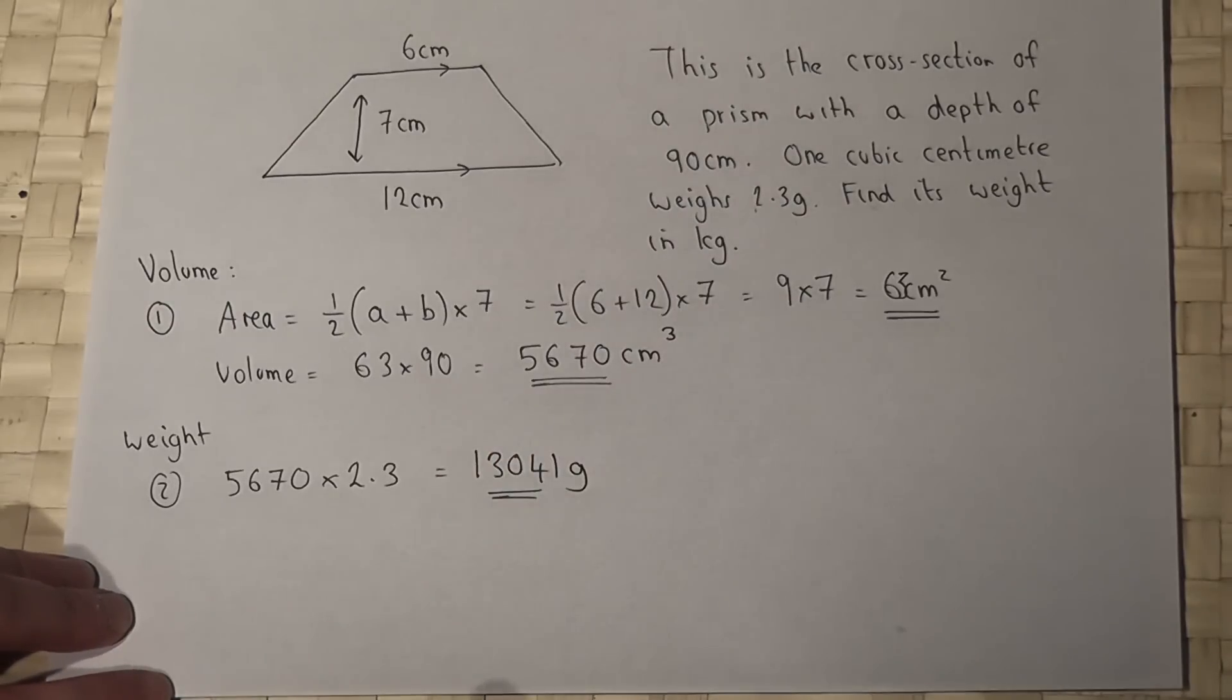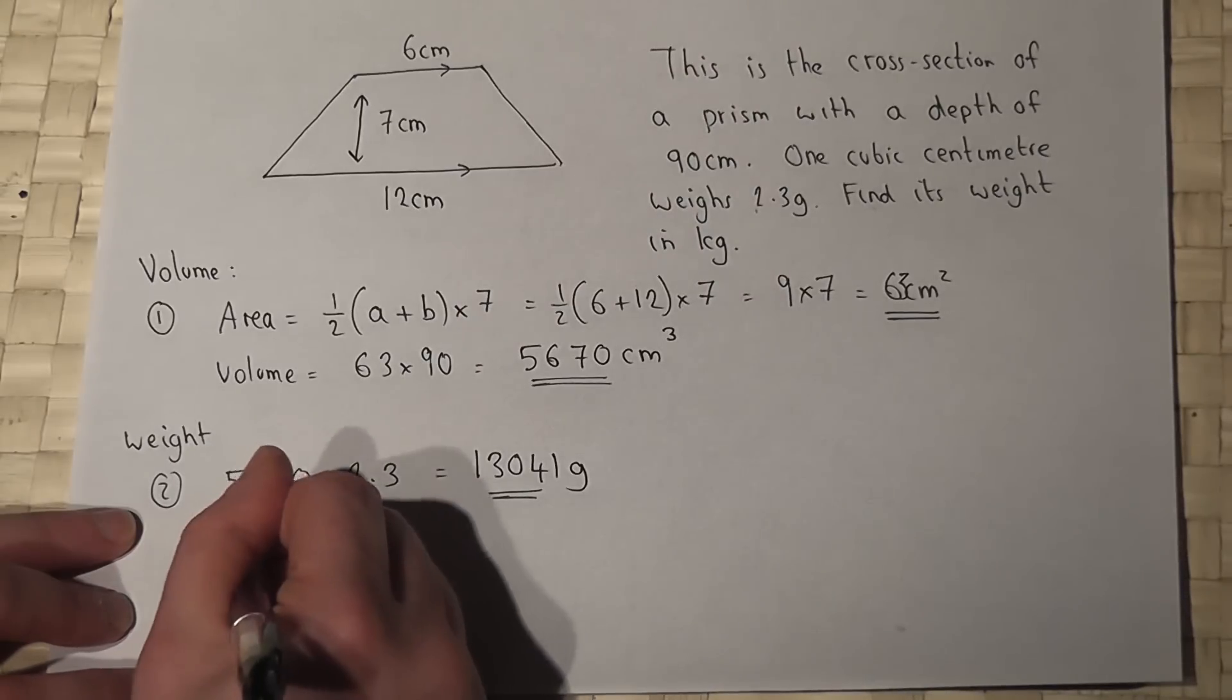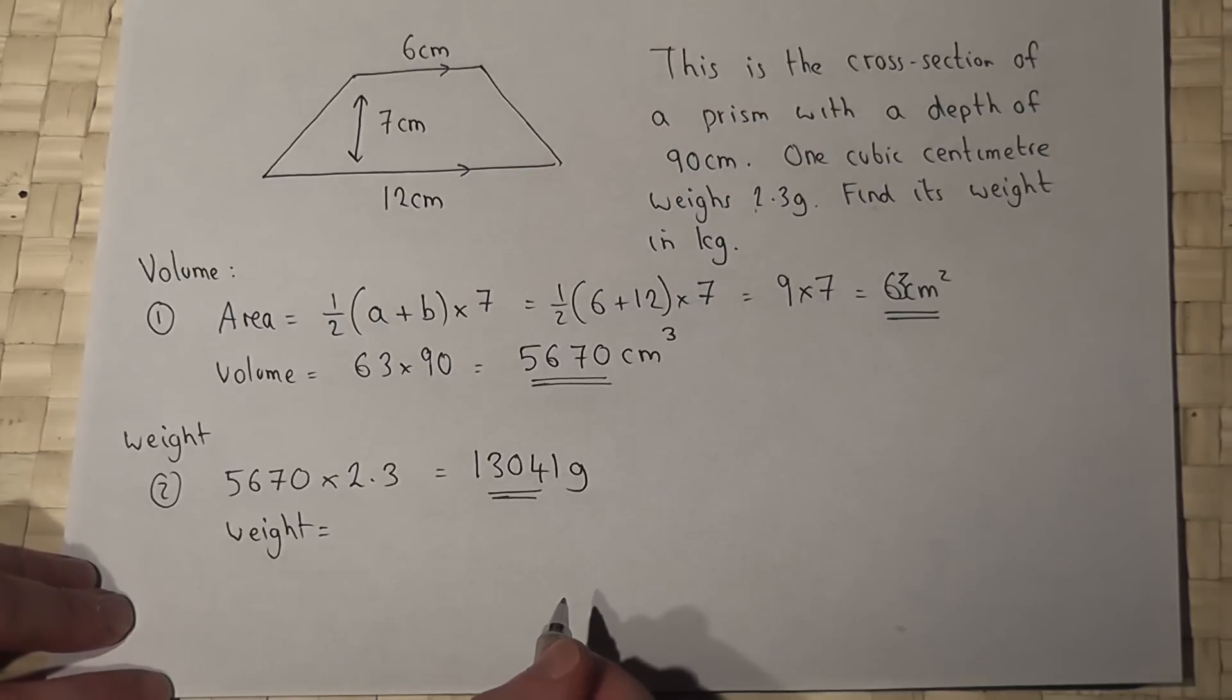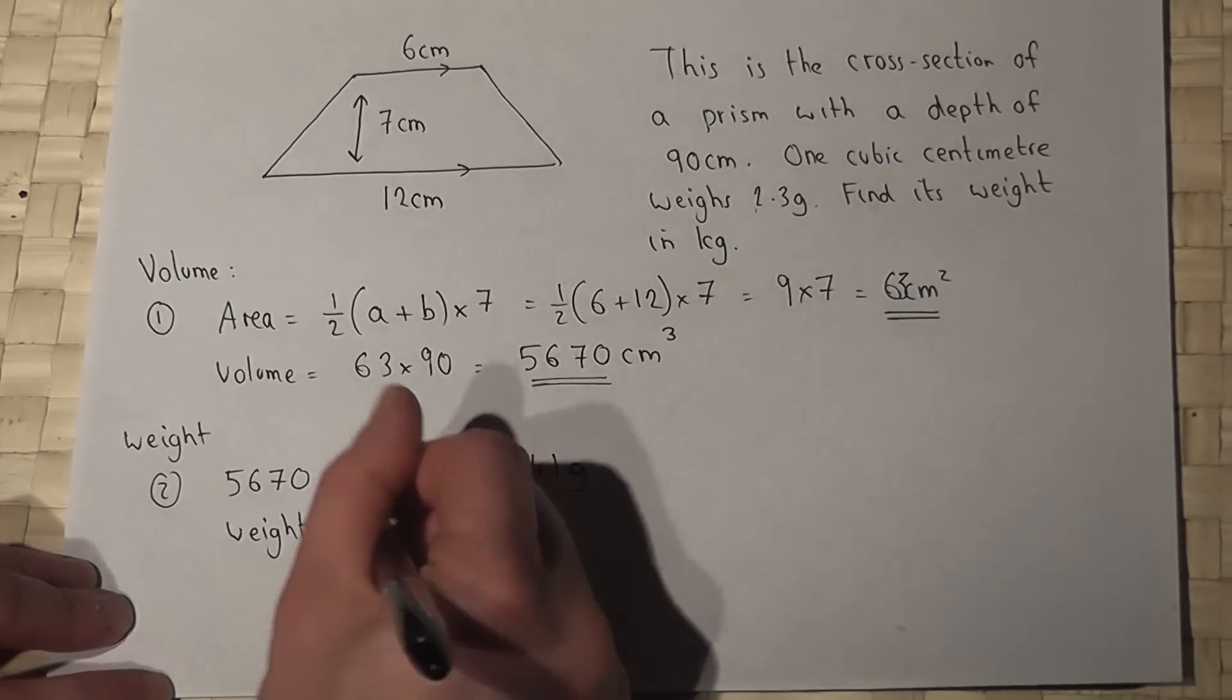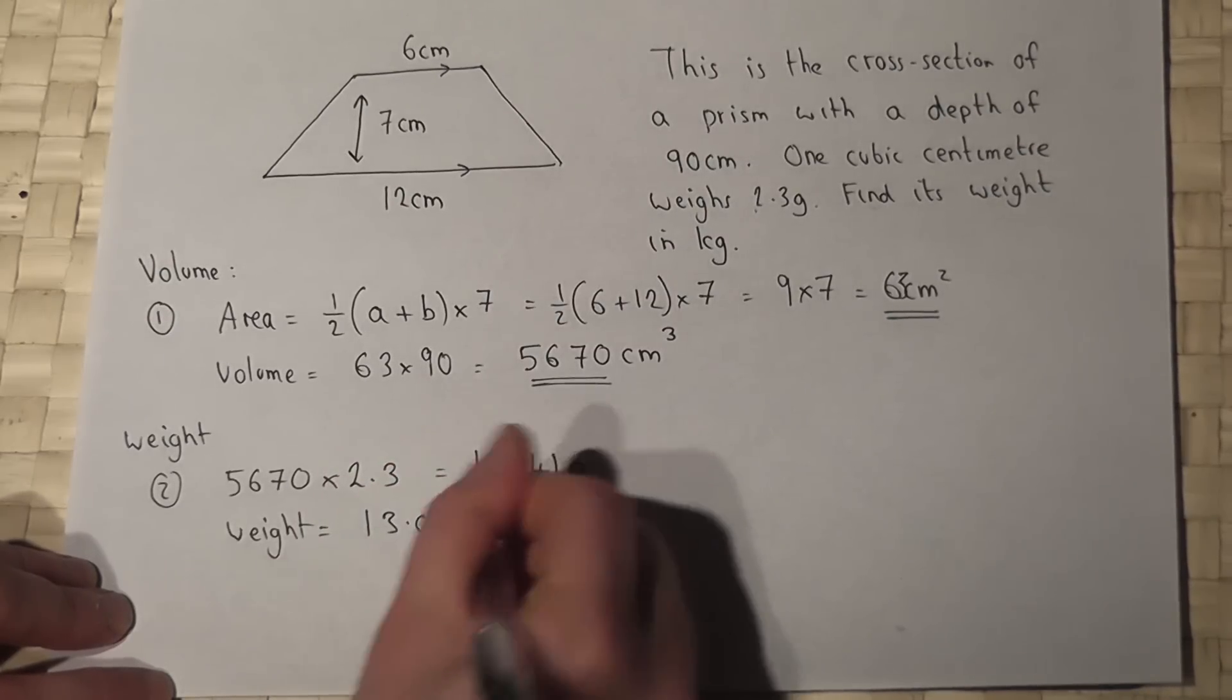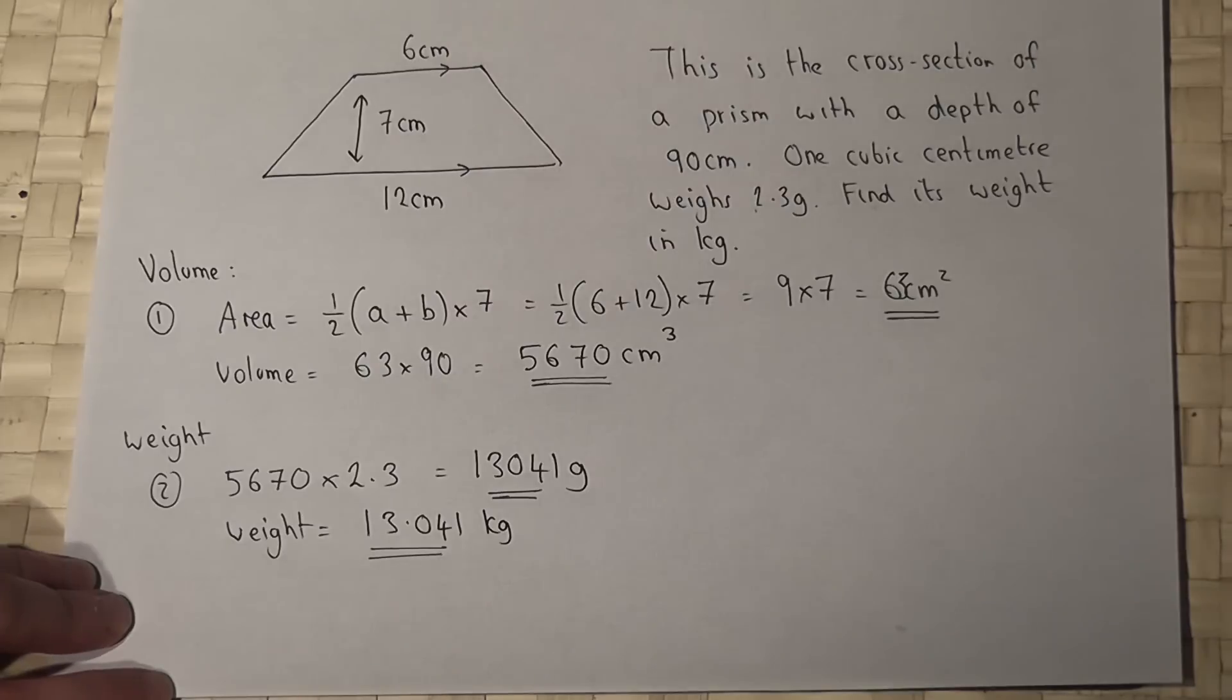We're asked for this in kilograms, so therefore its weight in kilograms will be this value divided by a thousand because of a thousand grams per kilogram. So we get 13.041 kilograms or 13 kilograms to the nearest kilogram.